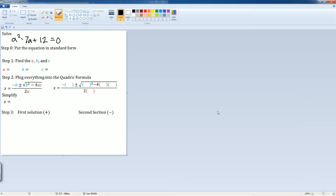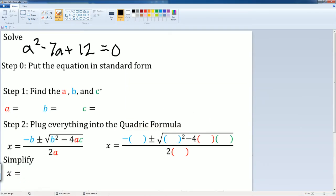This is a great problem because it's already in standard form. So I can now just write down my a term, which is 1. My b term is going to be negative 7. And my c term is going to be the 12.